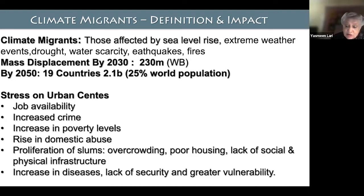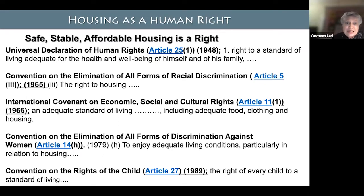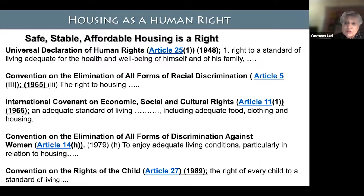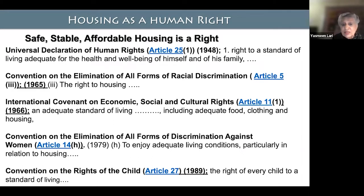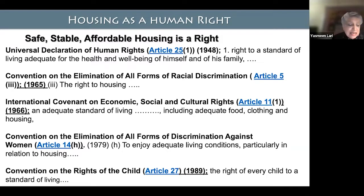On the human rights issue: there are several covenants most countries have signed — the Universal Declaration of Human Rights of 1948, the Convention on Elimination of Racial Discrimination of 1965, the International Covenant on Economic, Social and Cultural Rights of 1966, the Convention on Elimination of Discrimination Against Women of 1979, and the Convention on the Rights of the Child of 1989. Countries have signed but not paid much attention to the rights enshrined in these covenants.